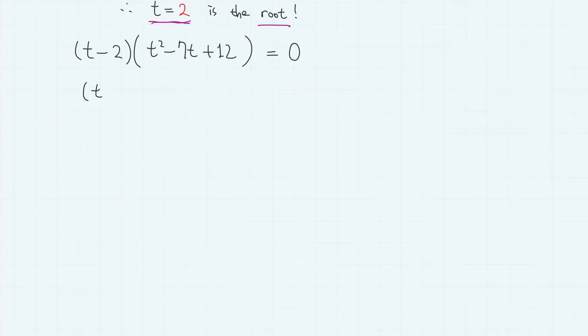So, we have t minus 2. And this part can be further factored into t minus 3 times t minus 4. So, we have t equals 2, 3, and 4.